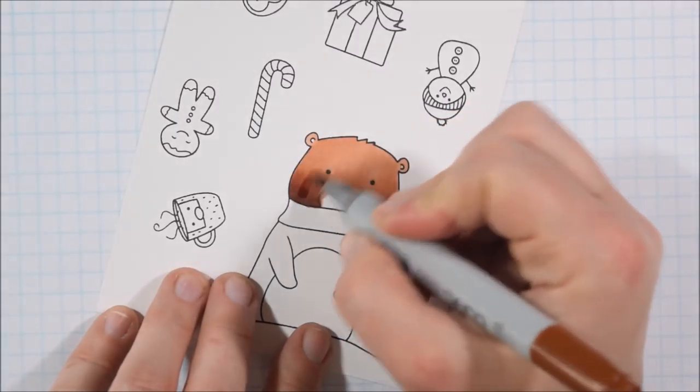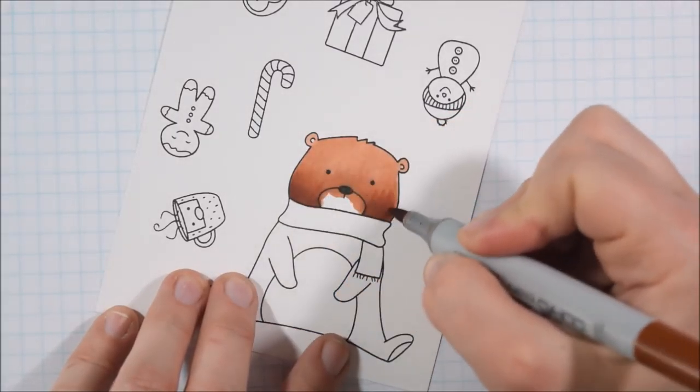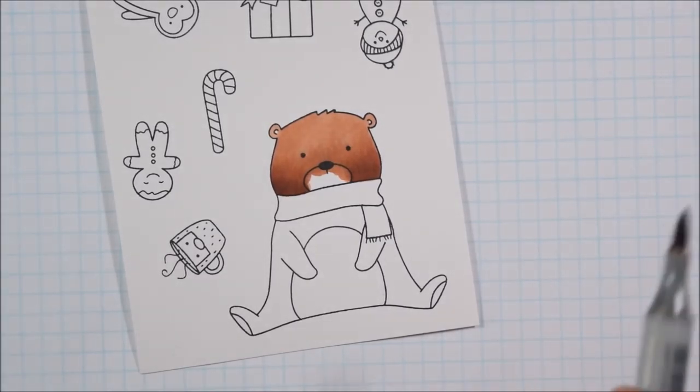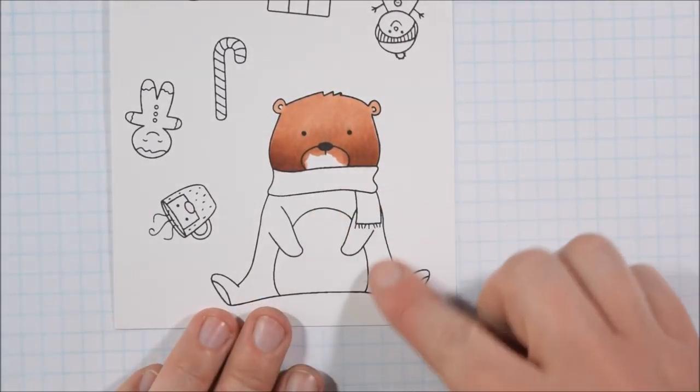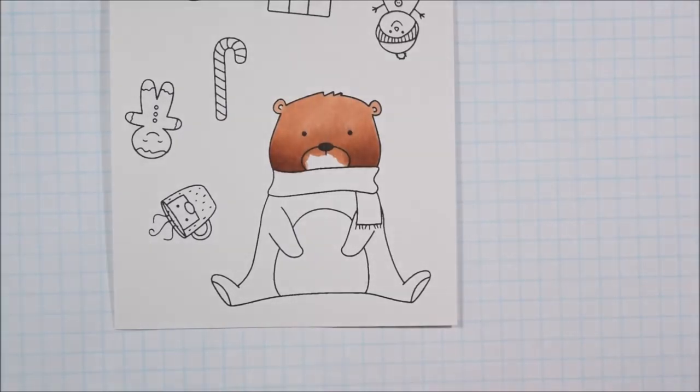I'm going to use the E19 for the shadows. I'm going to put the shadows on where the scarf meets the bear because that would be casting a shadow onto him and I'm going to continue to just use that same sort of coloring method to get through the bear.